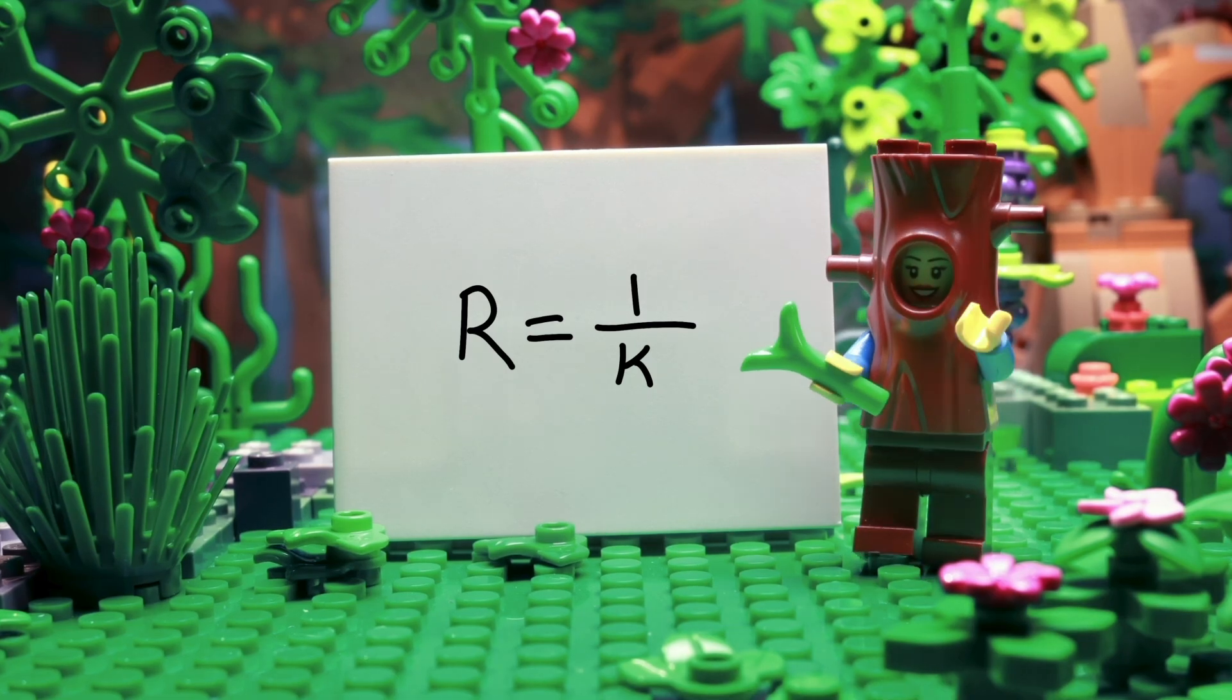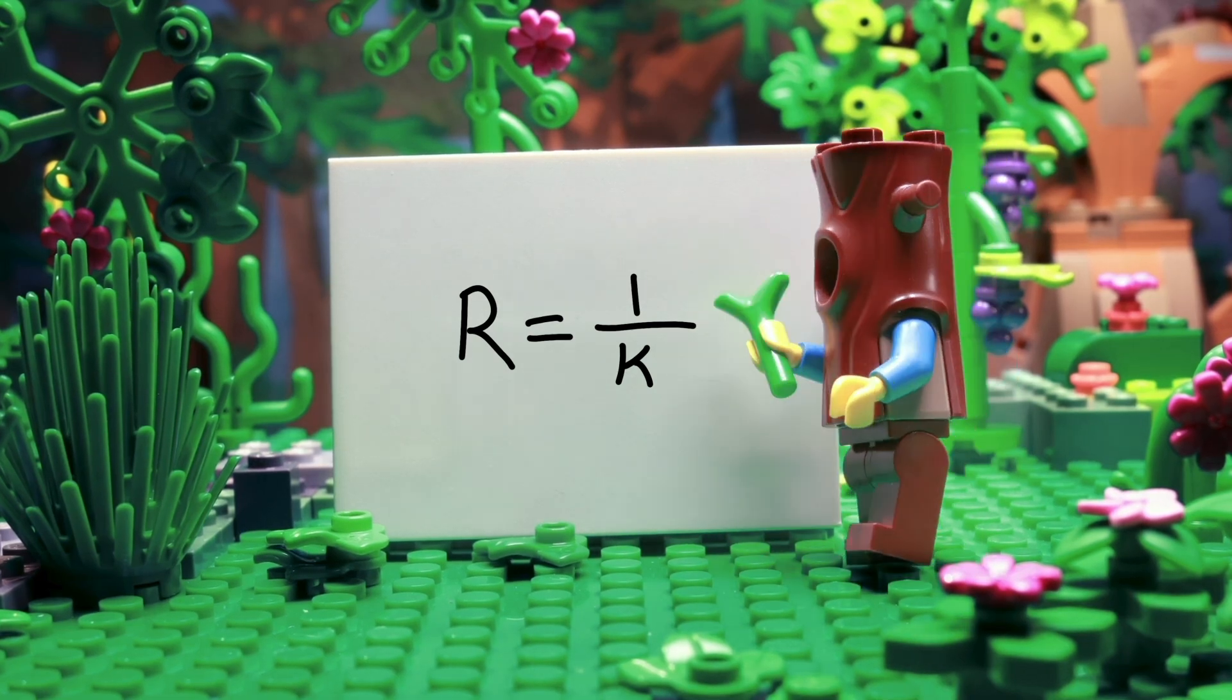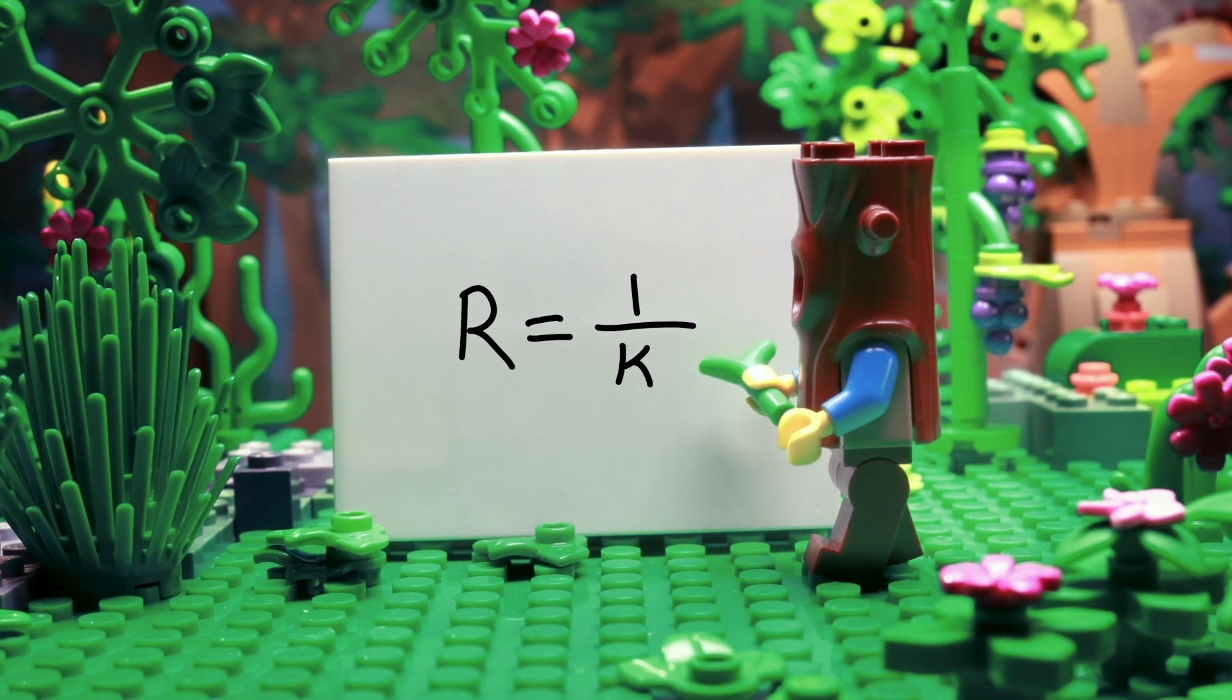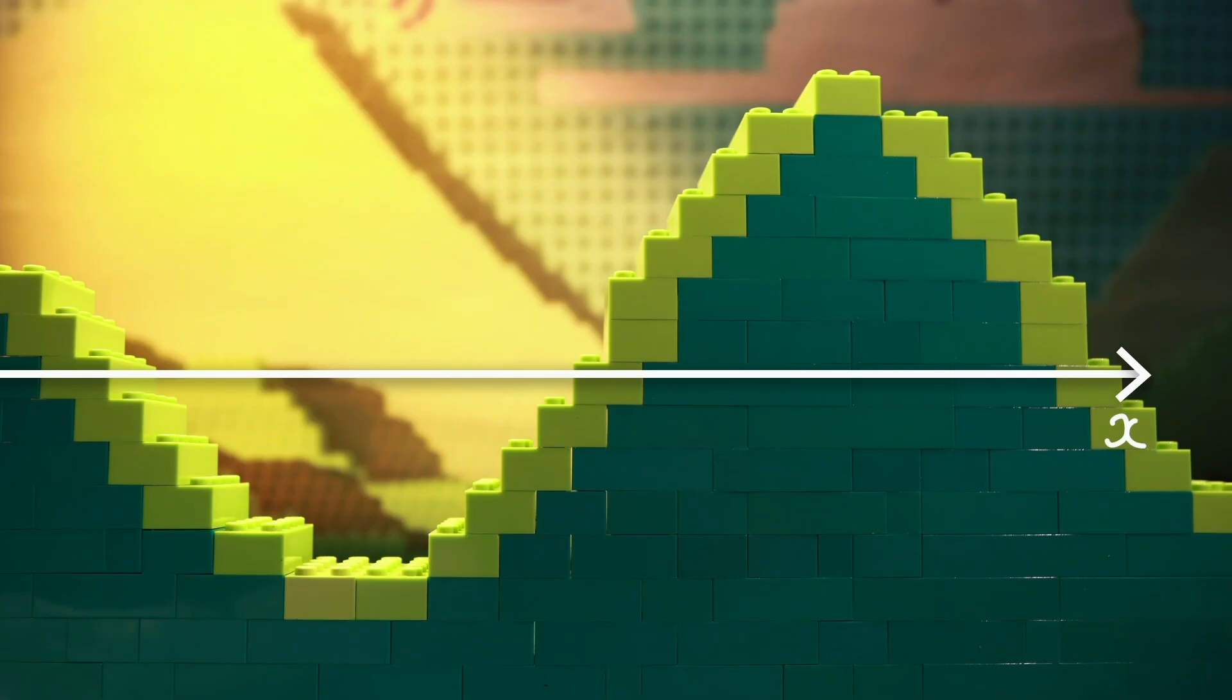Another property we can use is the reciprocal of curvature, which means calculating one divided by kappa. This property of the curve is called the radius of curvature, and at a point gives a radius of the circle that osculates the curve.